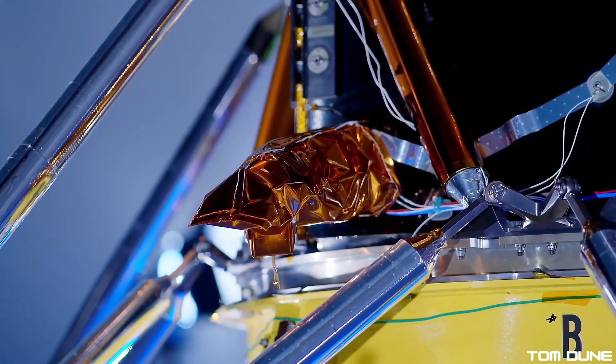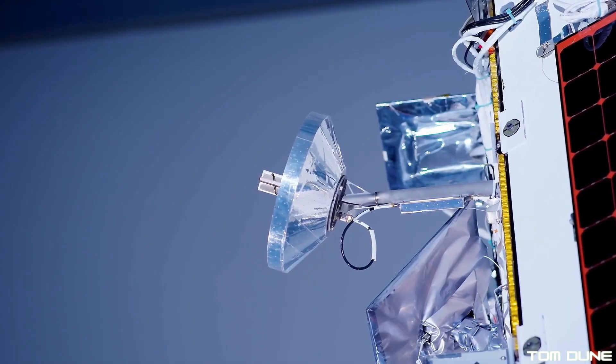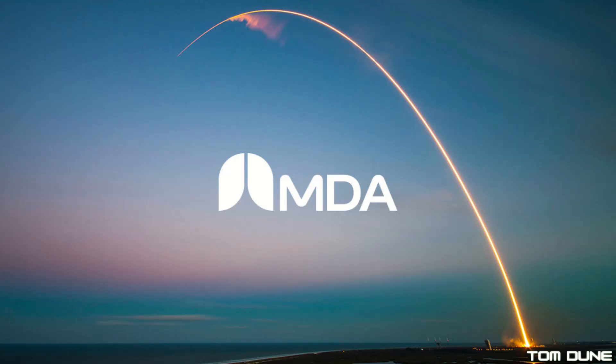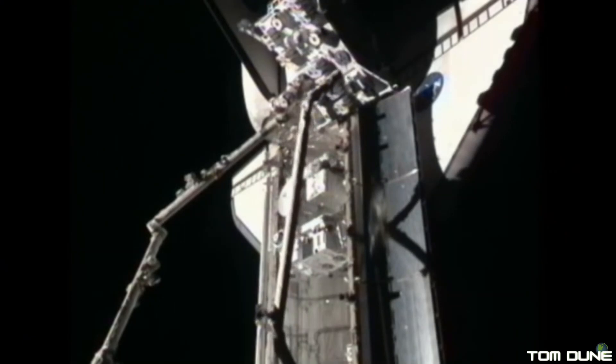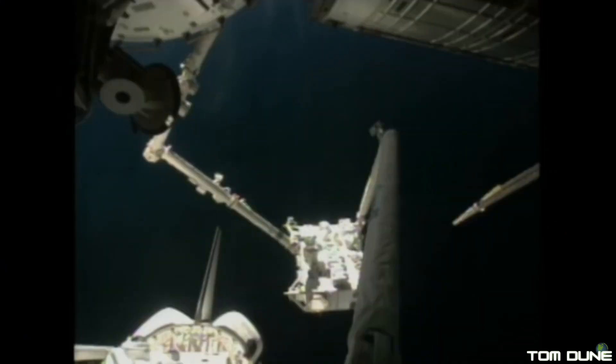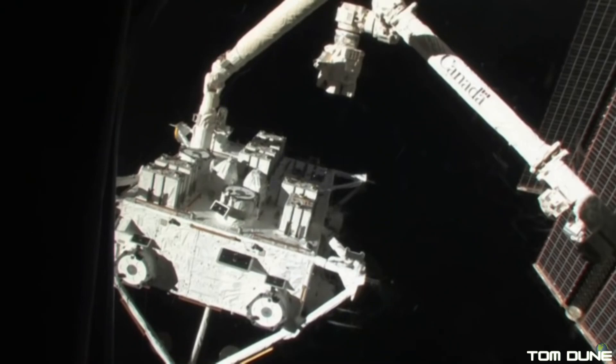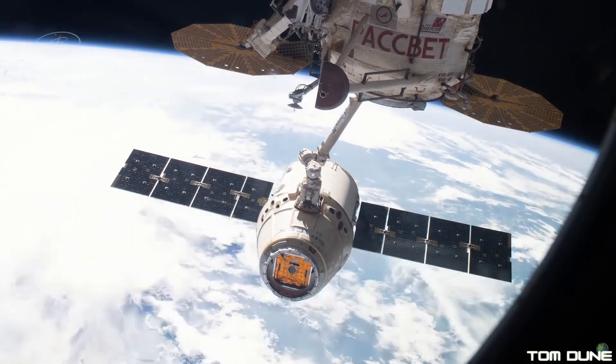But, I hear you ask, what does all this have to do with the UK, given this is a UK space news channel? Well, as it happens, the UK-based branch of Canadian company MDA, famous for their Canada Arm, which was on the space shuttle, and Canada Arm 2 on the ISS, have provided the landing sensors for the spacecraft.